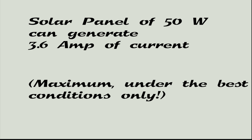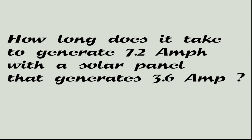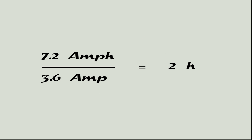So how long will it take to generate 7.2Ah? Very simple — it takes 2 hours. Just divide 7.2 by 3.6.